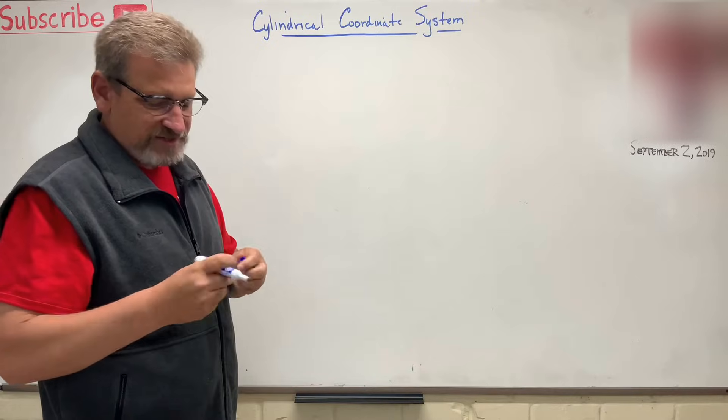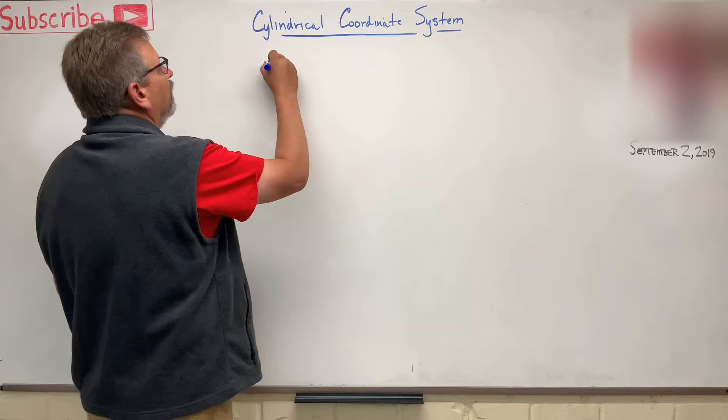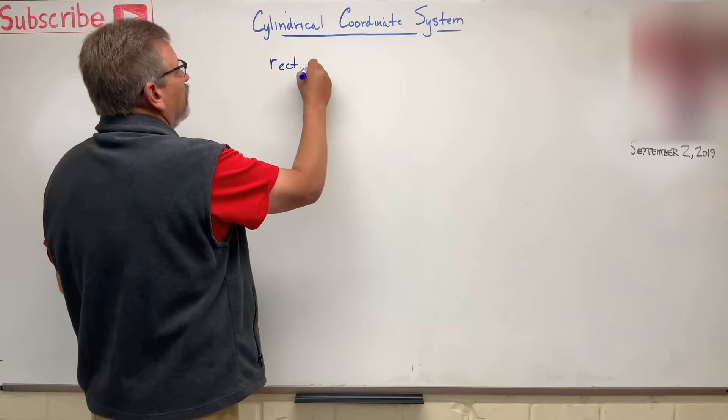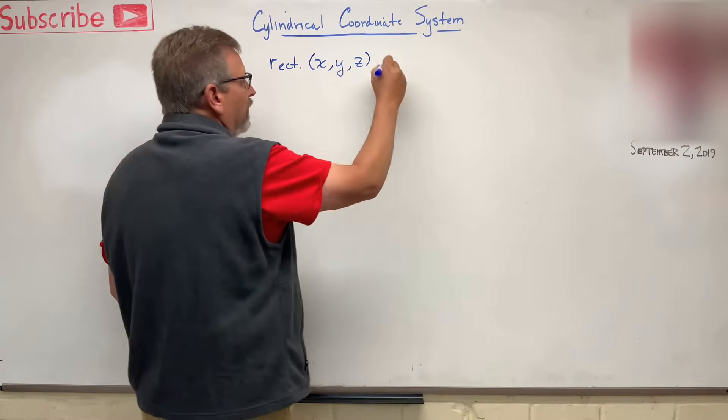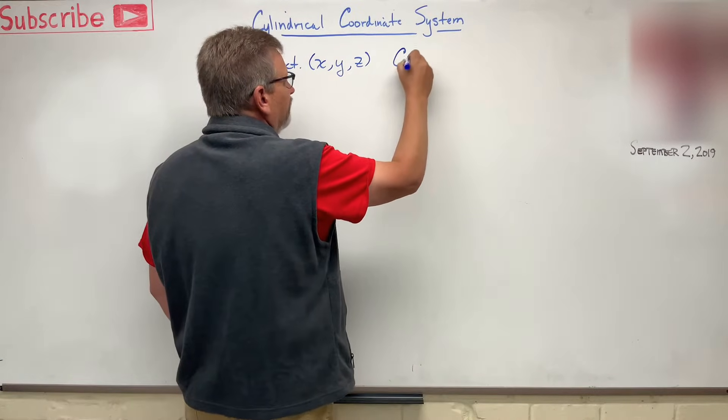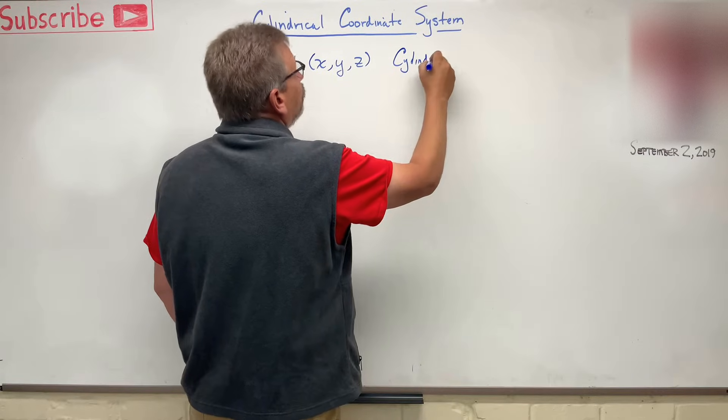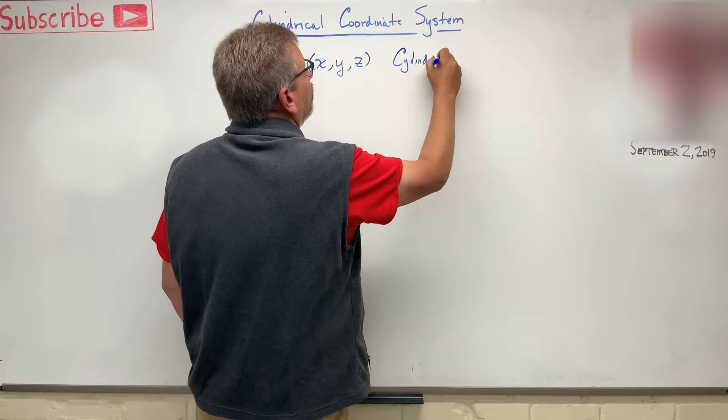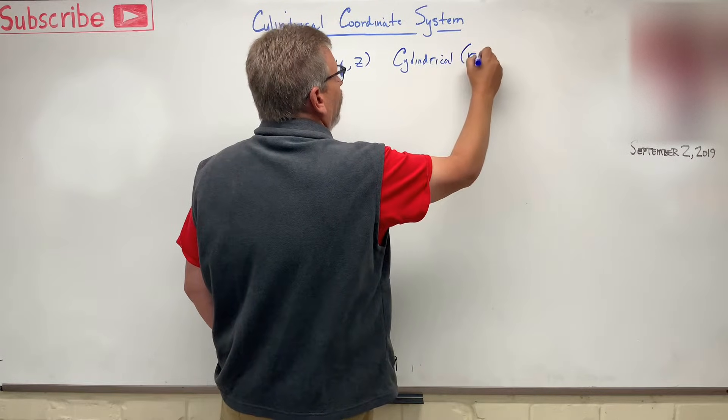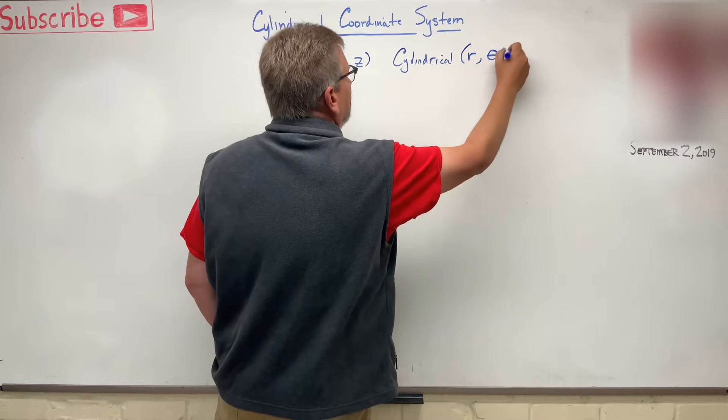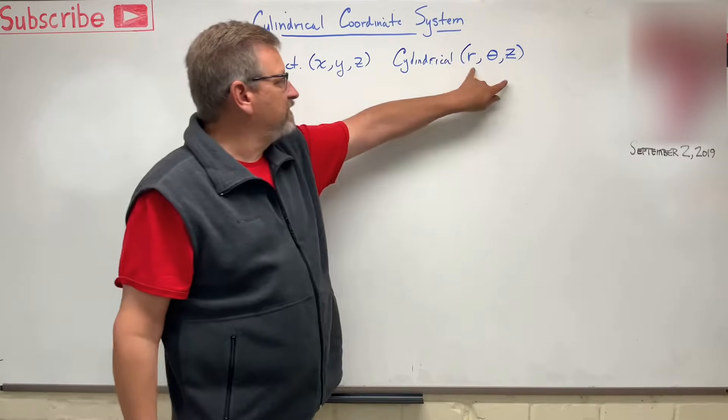Cylindrical coordinate system is given with a different set of coordinates than our typical rectangular. So rectangular, we're used to an x, a y, and a z coordinate. But in the cylindrical system, you get an r, a theta, and then a z. So this is rectangular, this is cylindrical.